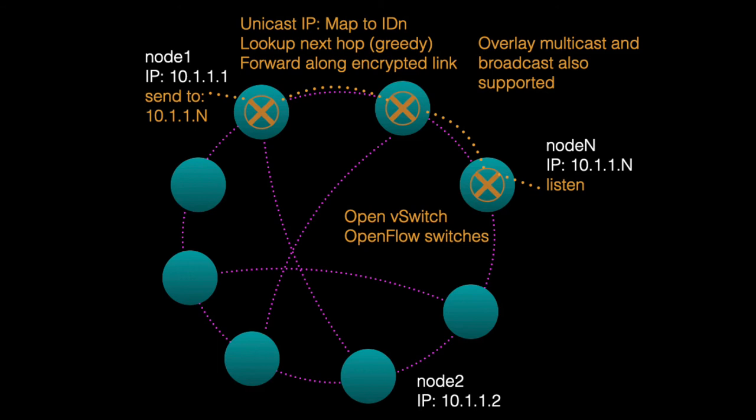As part of learning this path, the software switches are programmed to create a flow from node 1 to node N through an intermediary link, in a way that is completely automated and self-configuring.